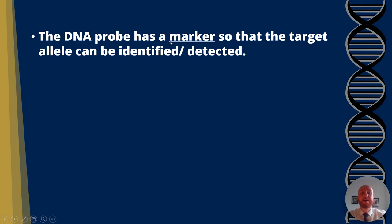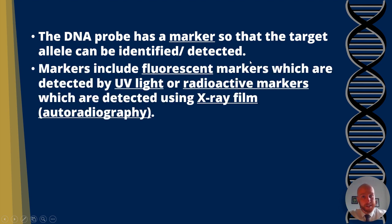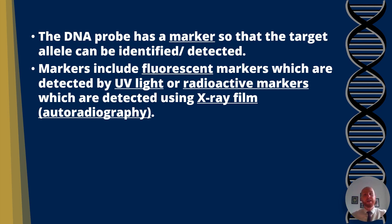The DNA probe has a marker so that the target allele can be identified or detected. Markers may include fluorescent markers, which are detected by UV light, or radioactive markers, which are detected using autoradiography using X-ray film. In the AQA mark schemes, you will often see X-ray film and autoradiography being accepted, so either of those is fine.